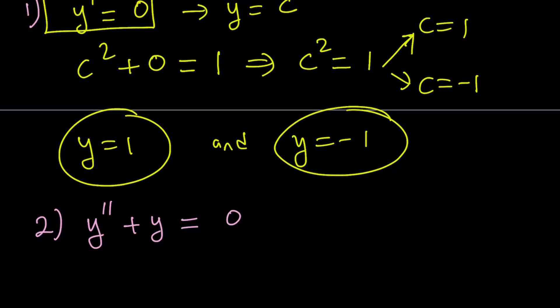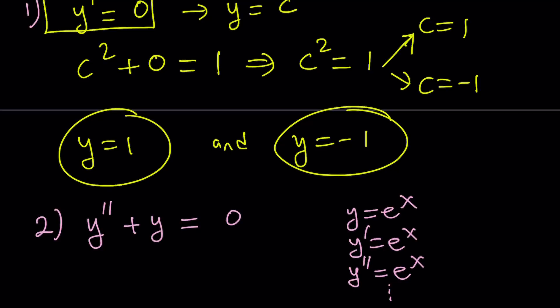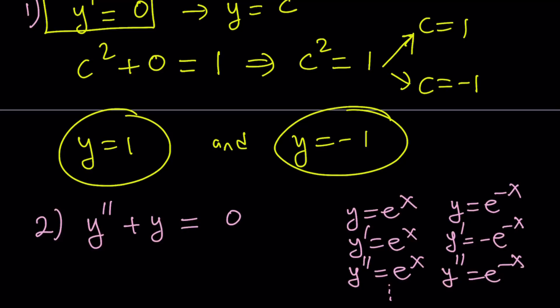Can it be exponential like e to the power of x? If y equals e to the x, the first and second derivatives are both the same function, so this doesn't help. How about e to the negative x? Differentiating once gives negative e to the negative x, and differentiating again gives positive e to the negative x — you get the function itself, not its opposite. So e to the negative x doesn't work either. We need a function whose second derivative is its opposite.